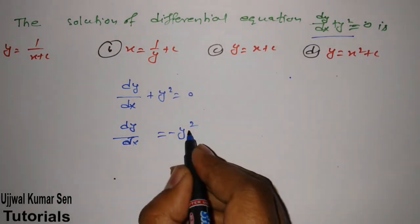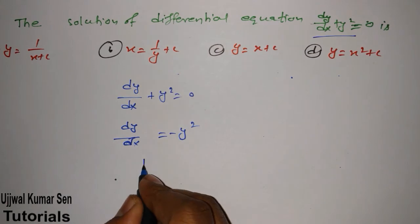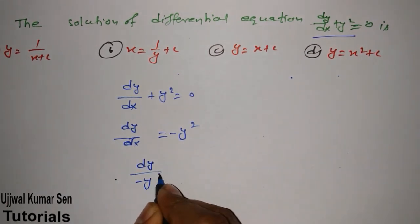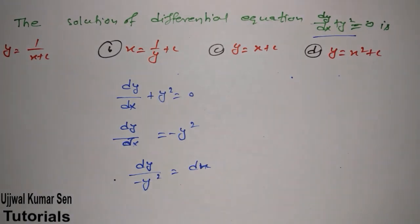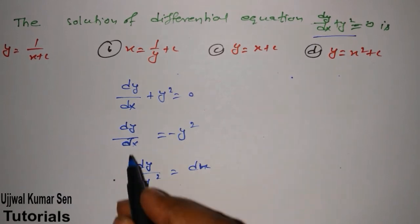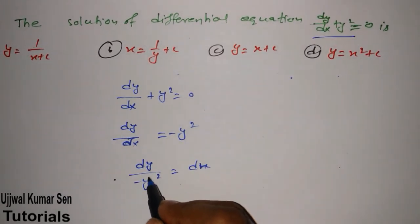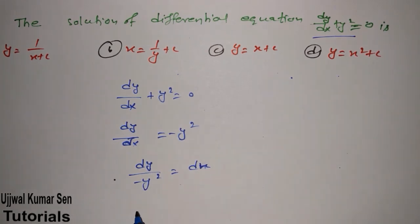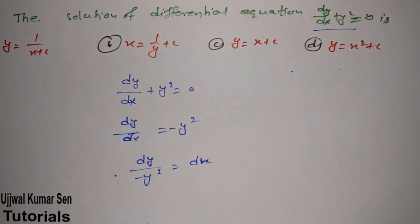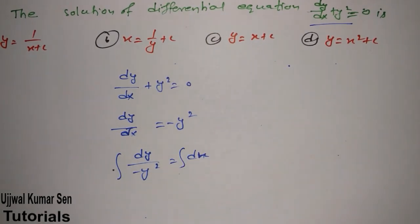Now send dx to one side and y² to the other side: dy / (-y²) = dx. Now we can integrate both sides. In variable separable we separate all like variables together — y terms on one side and x on the other — then integrate.